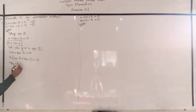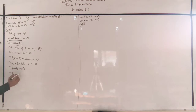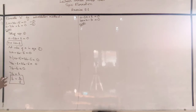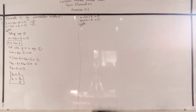Substituting: 2(2B minus 1) plus 3B minus 5 = 0, giving 4B minus 2 plus 3B minus 5 = 0, so 7B minus 7 = 0. Solving: B = 1. This final expression has no 'a' in it — it is independent of A, meaning A has been eliminated successfully.